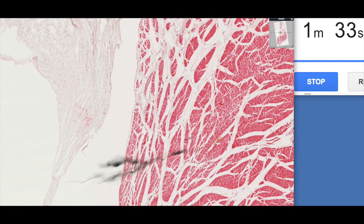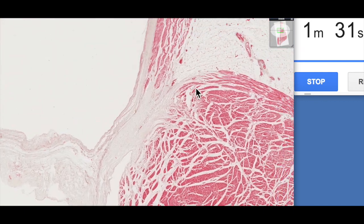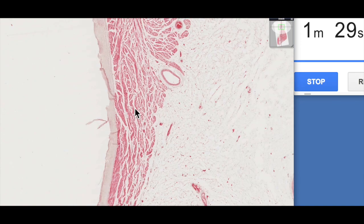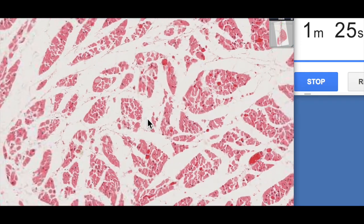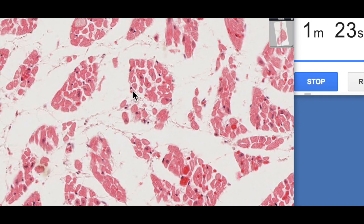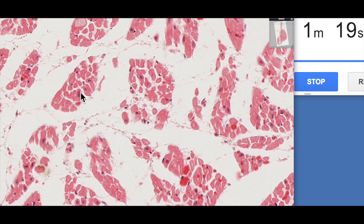So if we sort of zoom back out here, here we have the myocardium. If we have a quick look at the myocytes here, the cardiomyocytes and we can see them in cross section here, centrally located nuclei and we can see the cardiomyocytes are relatively small.